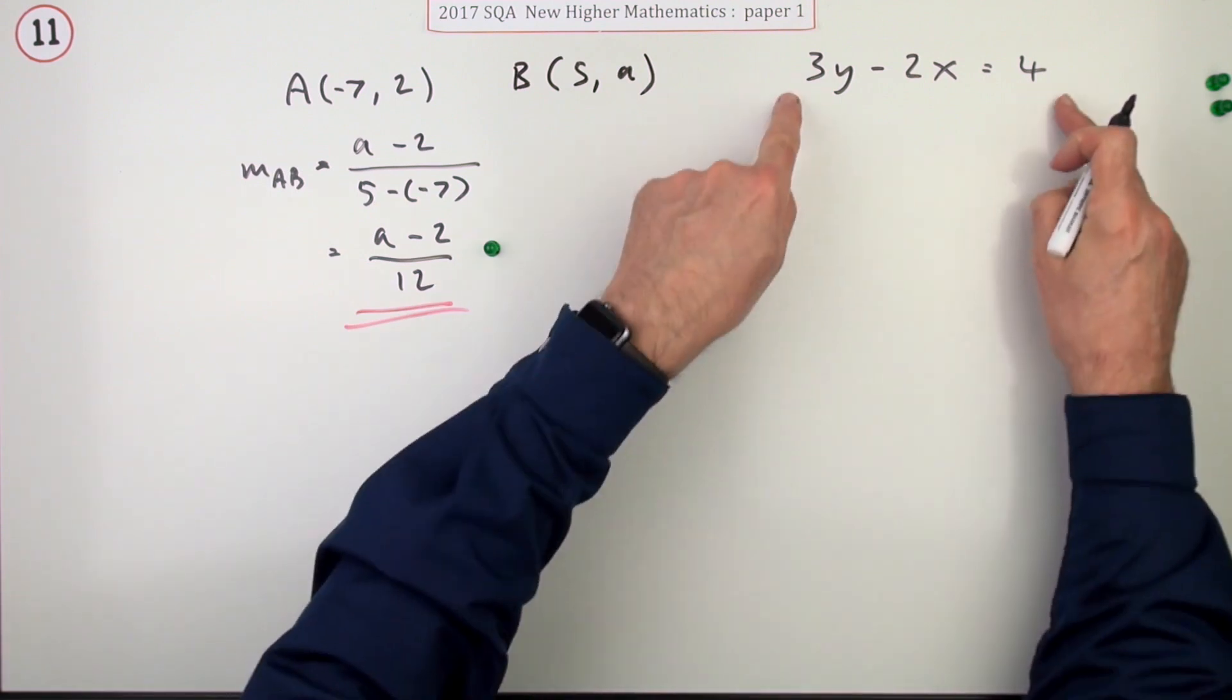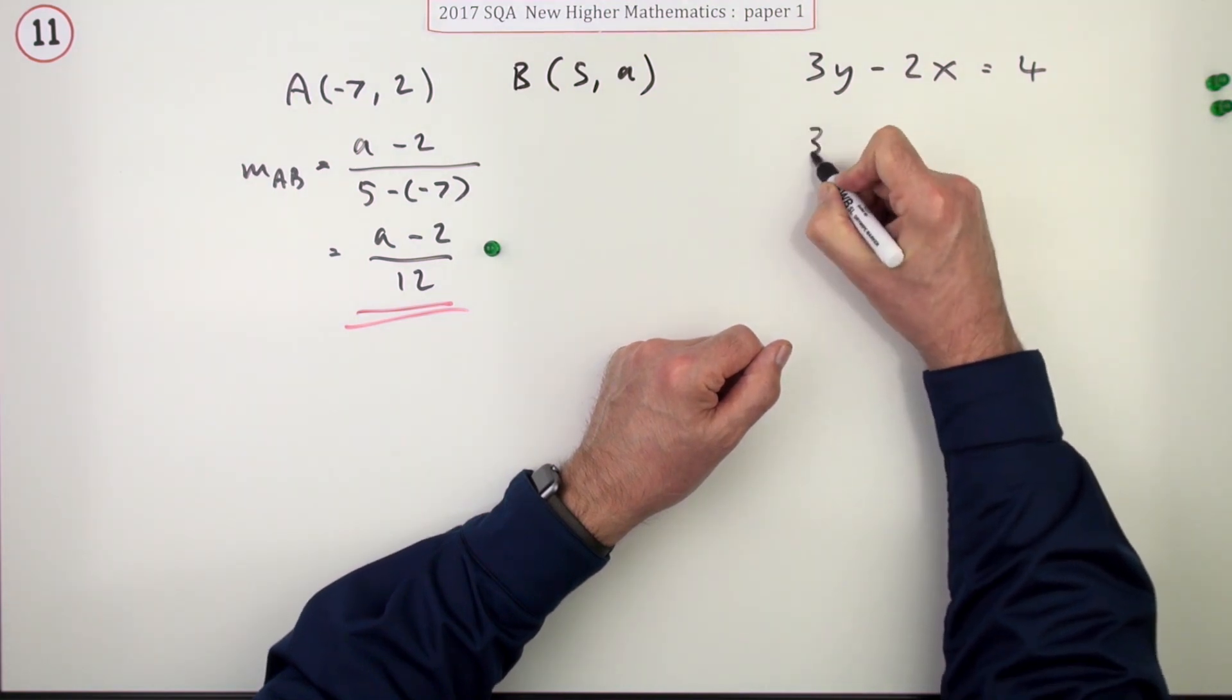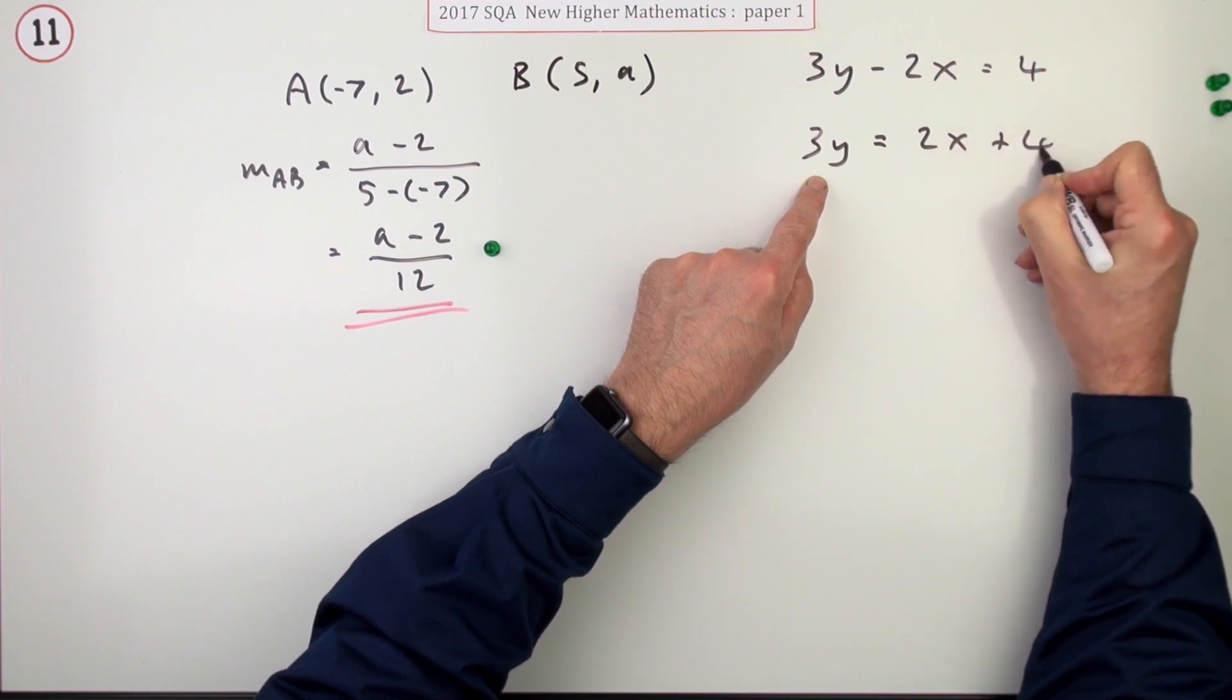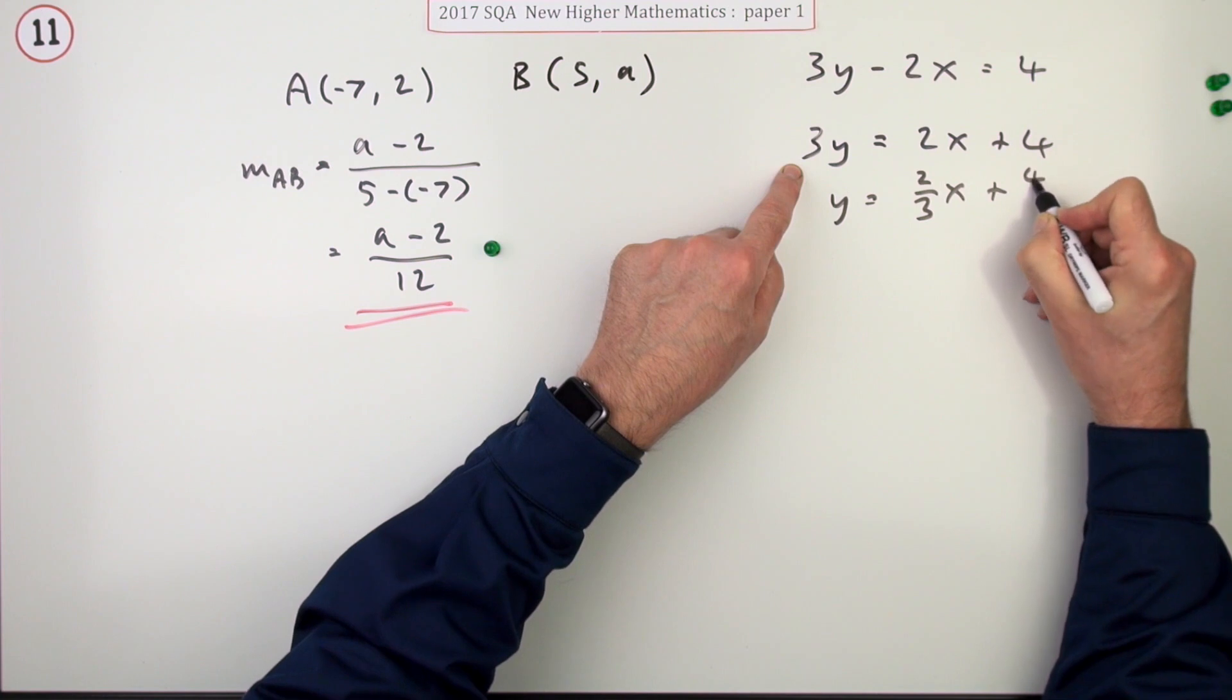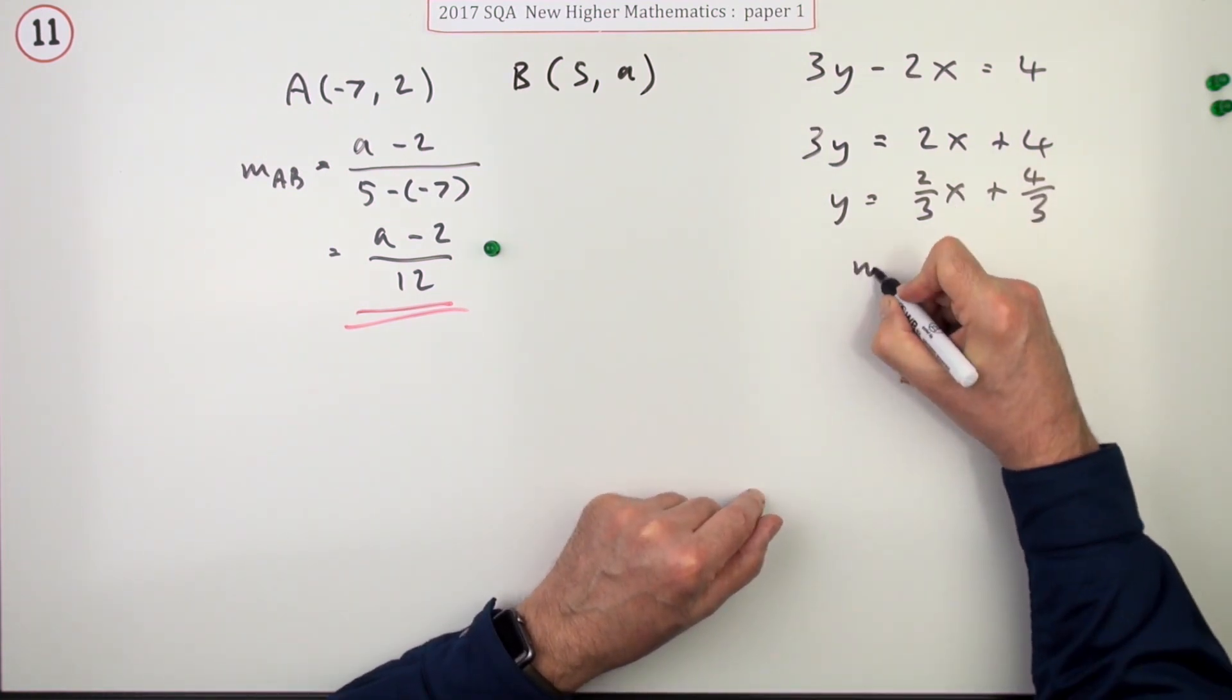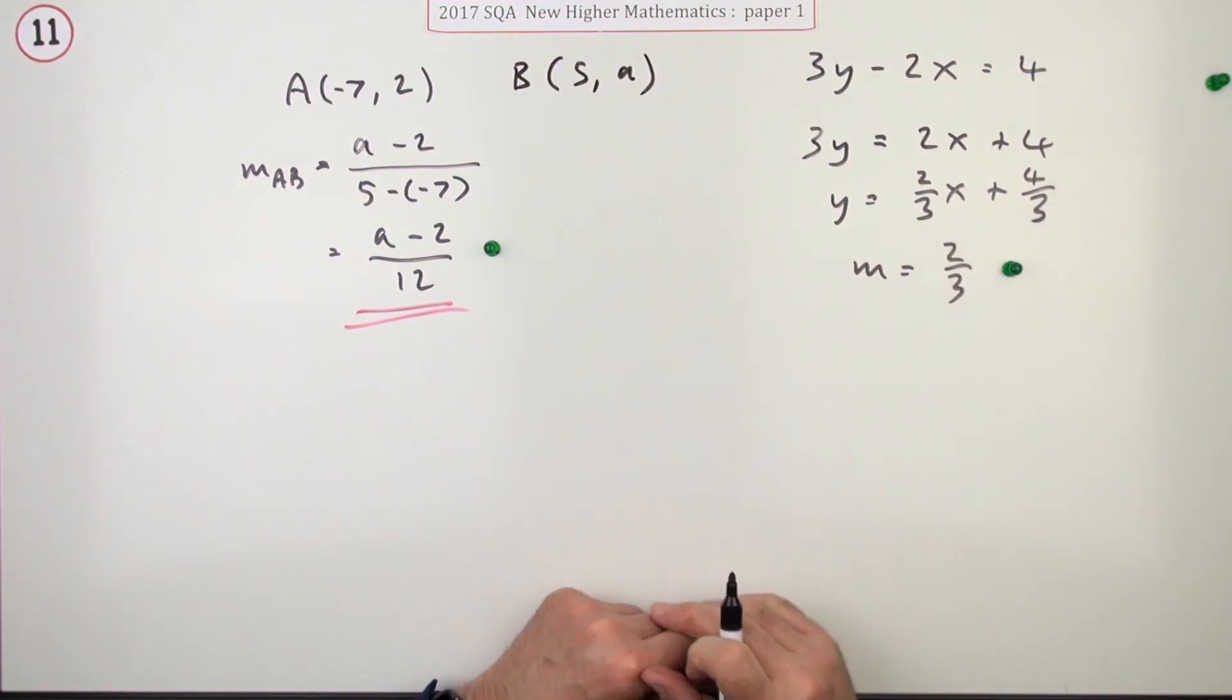If you did that first, you may well have done this one first - it doesn't matter which order you do them in. You have to get the gradient of this one. You want it in its standard form, so that means 3y is 2x plus 4, which means y is 2/3 of x plus 4 upon 3. From which you extract the gradient, the coefficient of x: 2/3. There's the other mark.